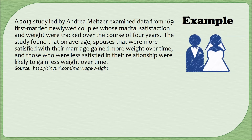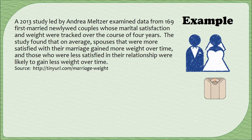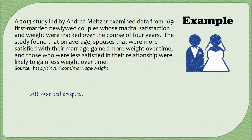In this example, Andrea Meltzer led a study in 2013 where she studied data from 169 first-married newlywed couples whose marital satisfaction and weight were tracked over the course of four years. The study finds that on average, spouses who are more satisfied with their marriage gain more weight over time, and those who are less satisfied in the relationship were likely to gain less weight over time. So happy couples gain more weight, unhappy couples gained less weight — that's essentially what this study found. And if you were to read a little headline or blurb about the results of this study, that's pretty much what you would hear: things about happy couples, things about unhappy couples. So that big group of people — all married couples — would kind of be the group you're trying to make conclusions about, the population we're trying to describe.